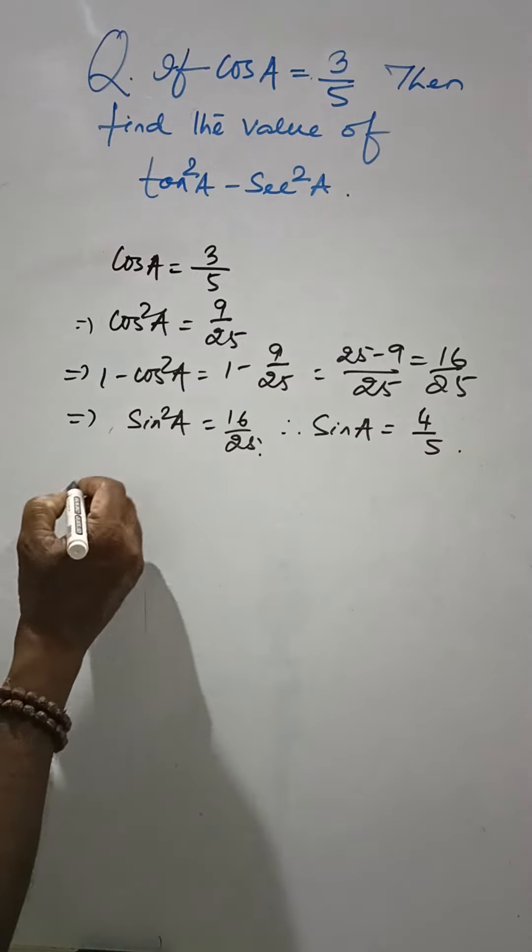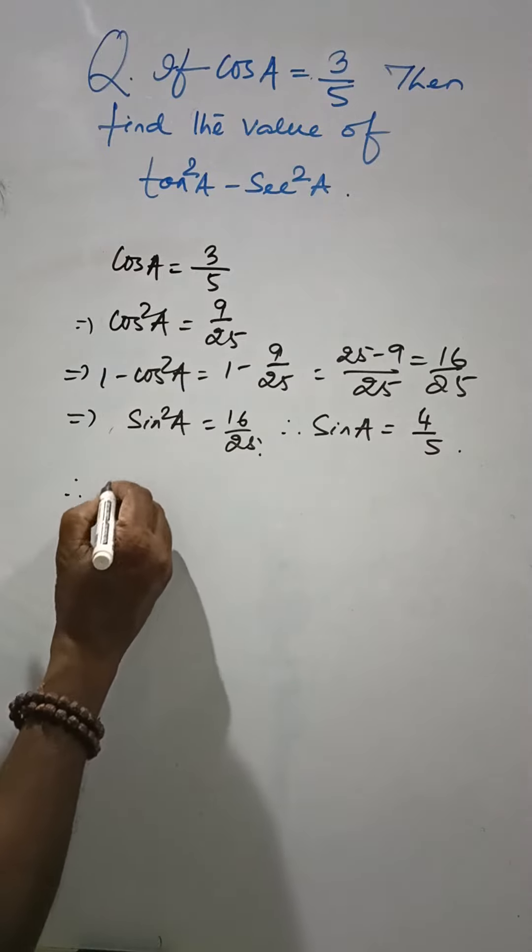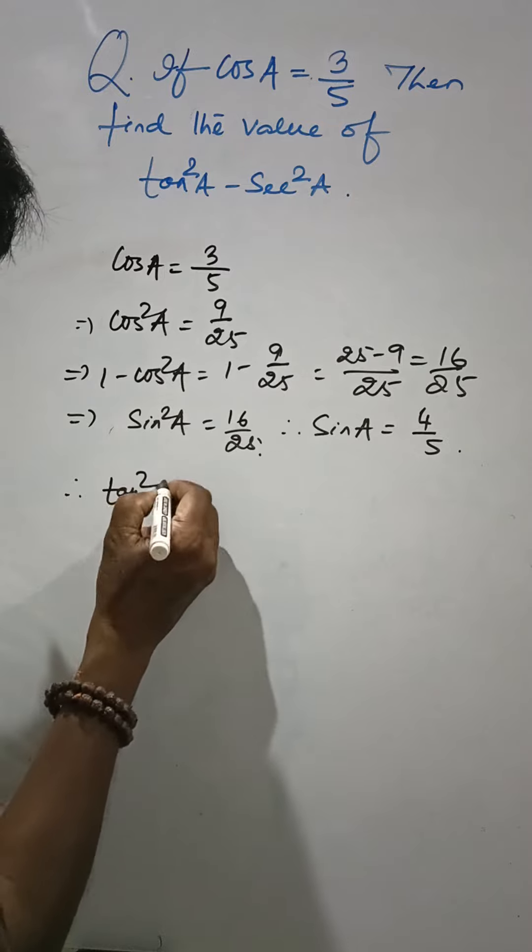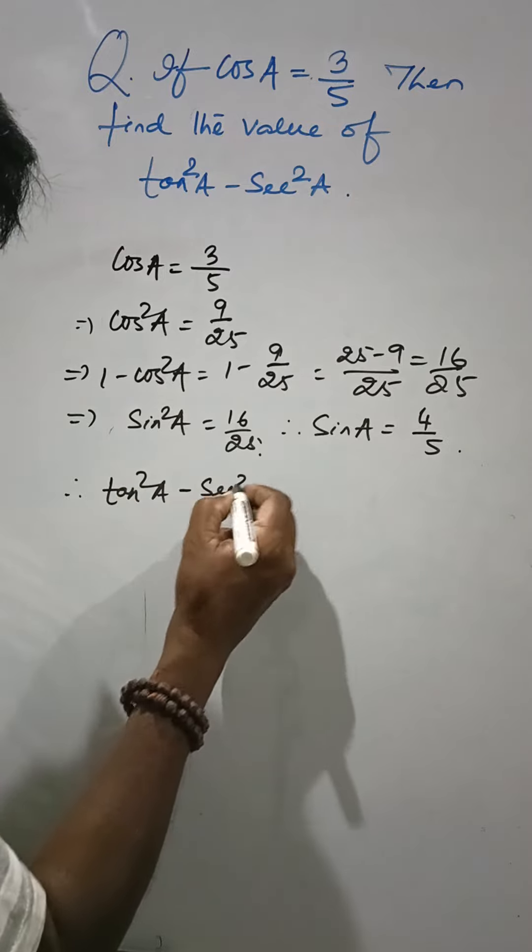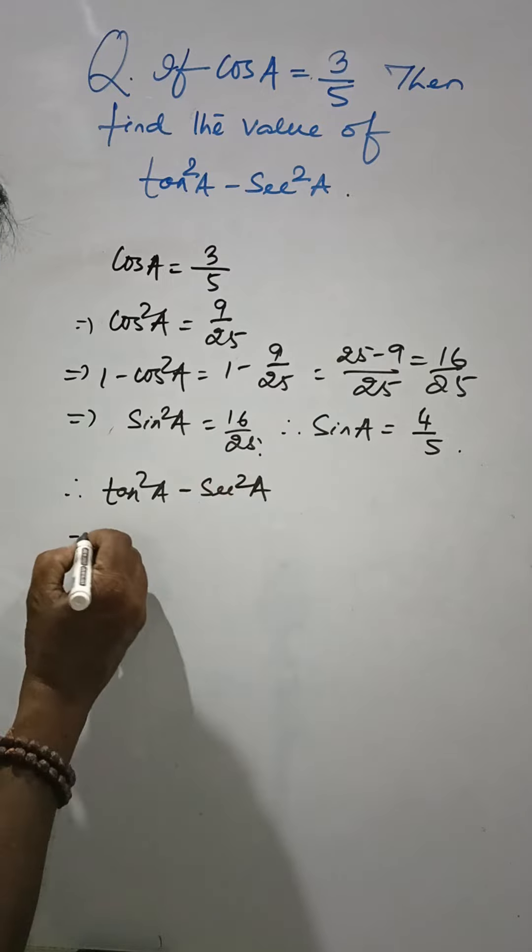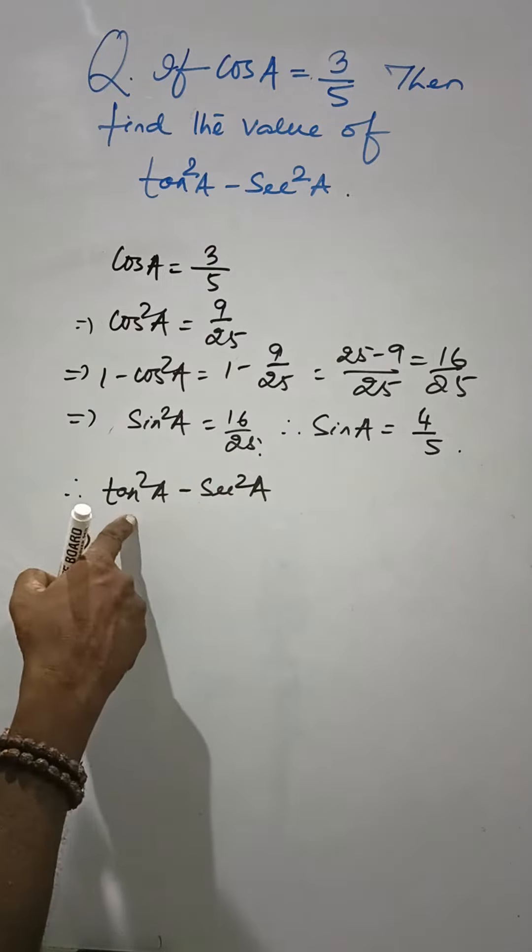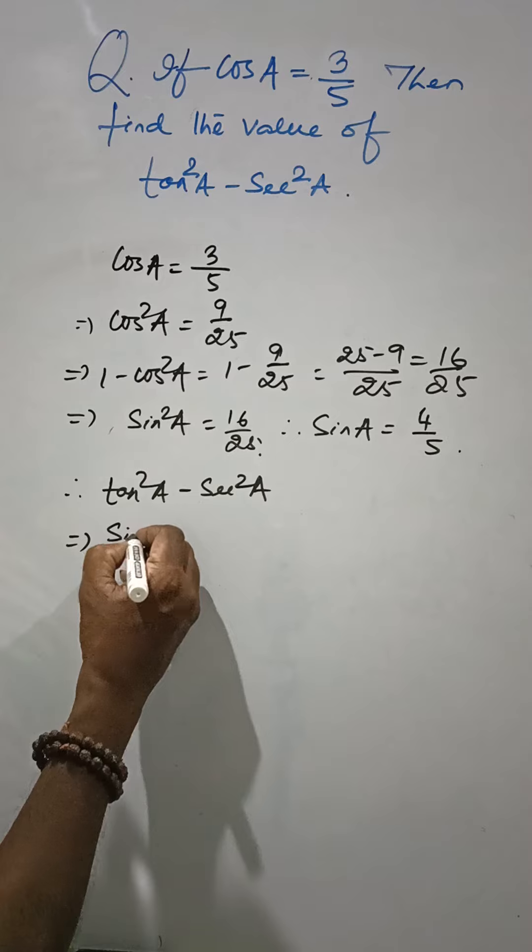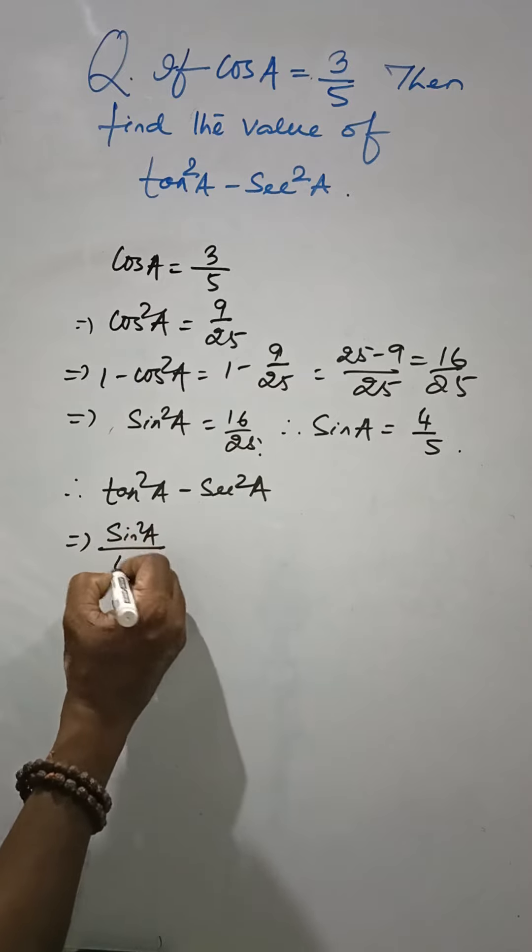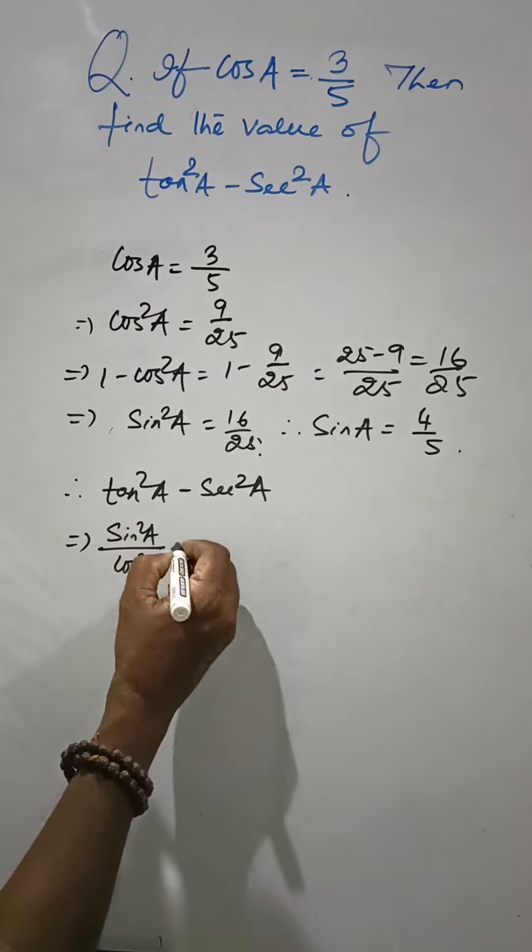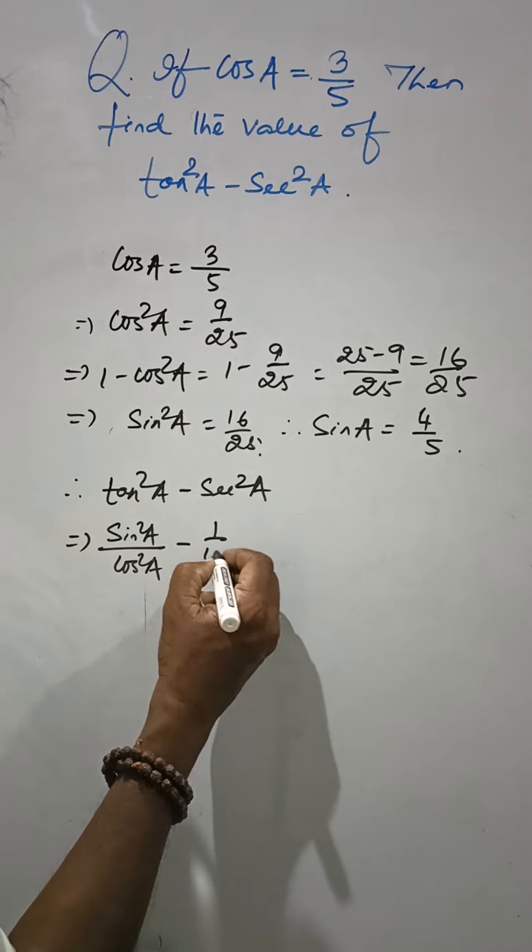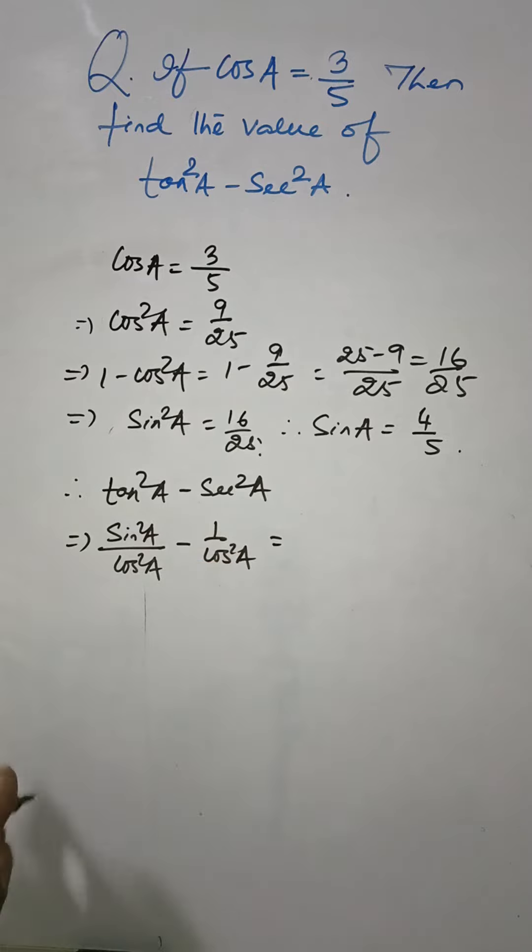So then we have tan square A minus sec square A. tan square A means sin square A by cos square A minus 1 by cos square A.